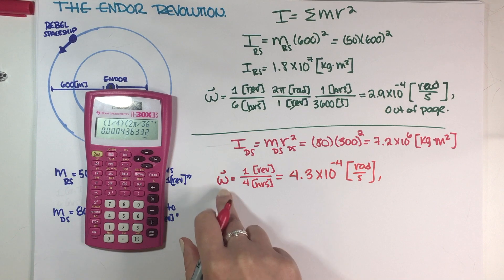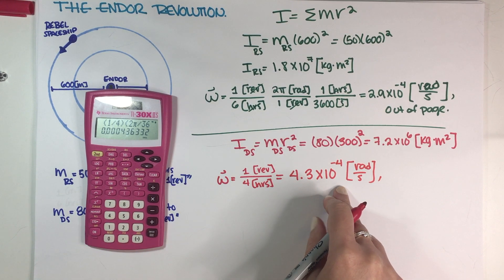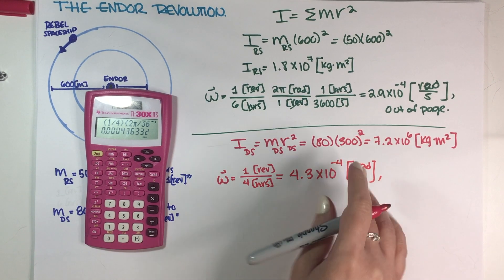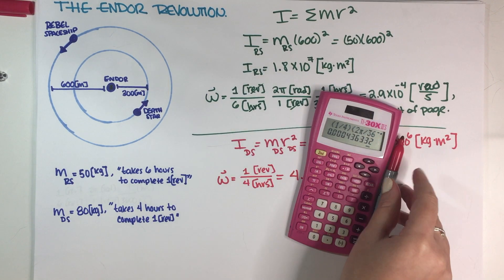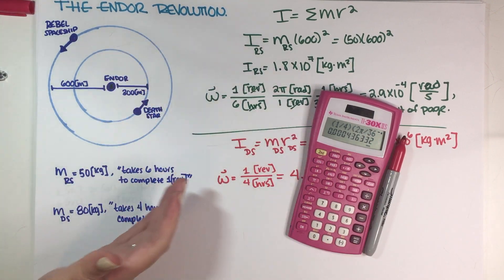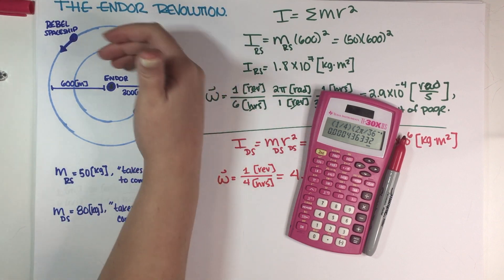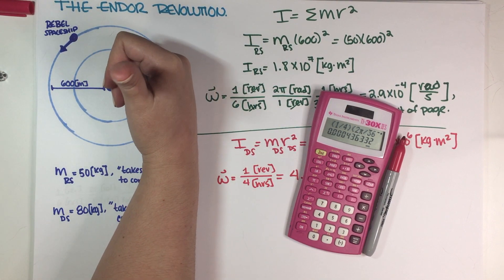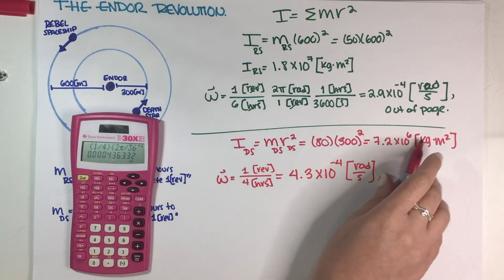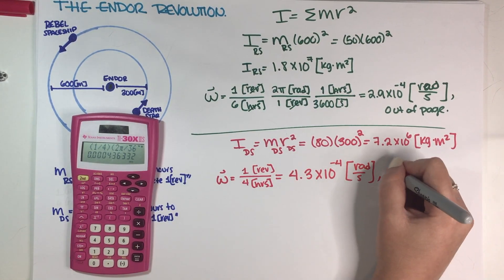Again, this is a vector, so in order to have a full answer we need both magnitude and direction. If you use your right-hand rule to follow the motion of the Death Star, you can see that if you rotate your fingers just as the Death Star is rotating, your thumb is also pointing out of the page. So this final answer is also out of the page.